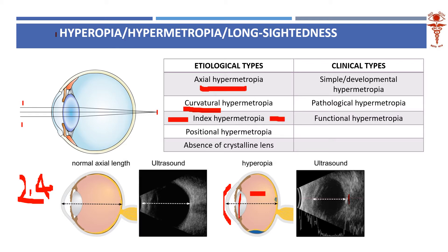Regarding cortical cataract, a common exam question asks what refractive error the patient tends to have — the answer is hypermetropic error, corrected with convex lenses. Another cause is absence of the crystalline lens — aphakia. The old method of intracapsular cataract extraction creates an aphakic state, and in that state the patient becomes hyperopic, with parallel rays of light focused behind the retina.